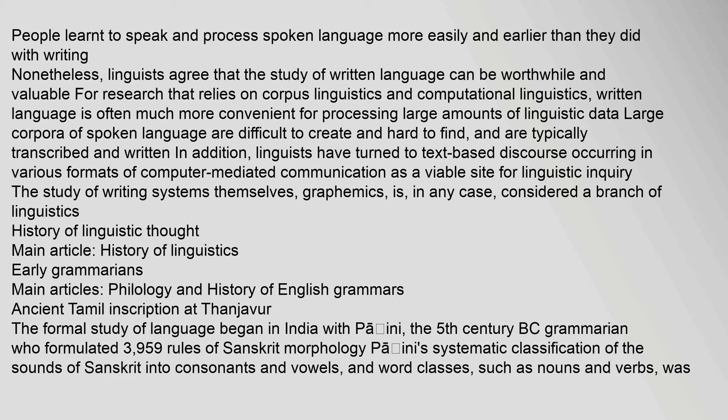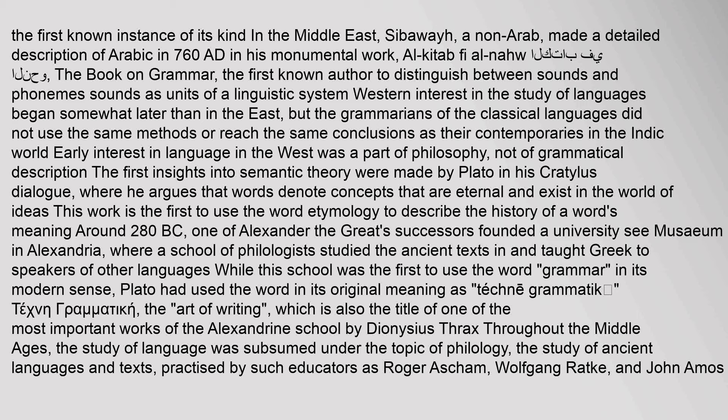The formal study of language began in India with Panini, the 5th century BC grammarian who formulated 3,959 rules of Sanskrit morphology. Panini's systematic classification of the sounds of Sanskrit into consonants and vowels, and word classes such as nouns and verbs, was the first known instance of its kind. In the Middle East, Sibawayhi made a detailed description of Arabic in 760 AD in his monumental work Al-Kitab fi al-Nahw — the book on grammar — the first known author to distinguish between sounds and phonemes as units of a linguistic system.